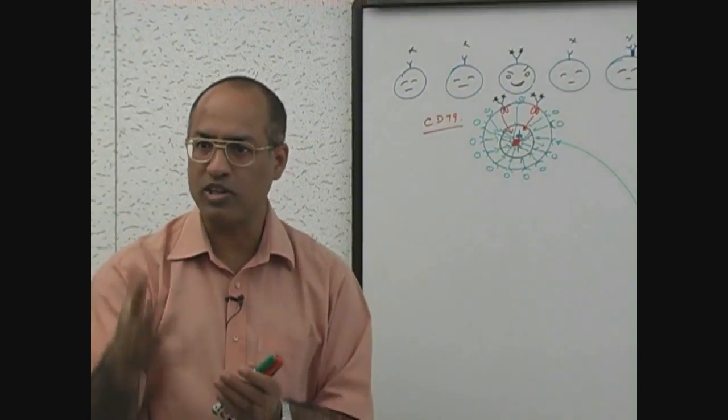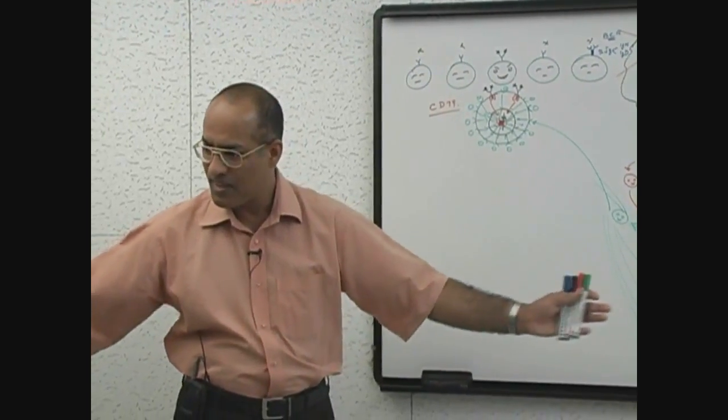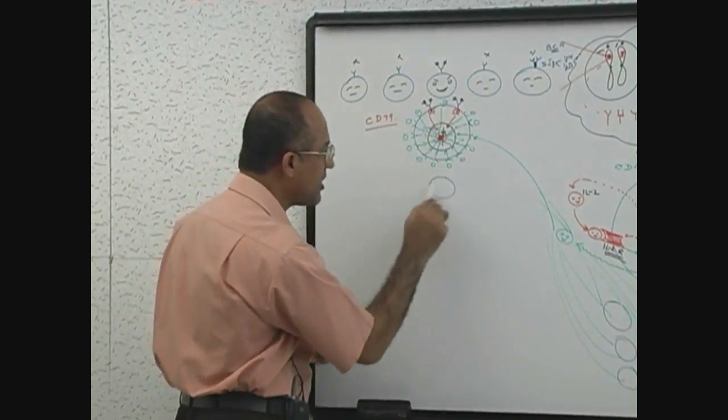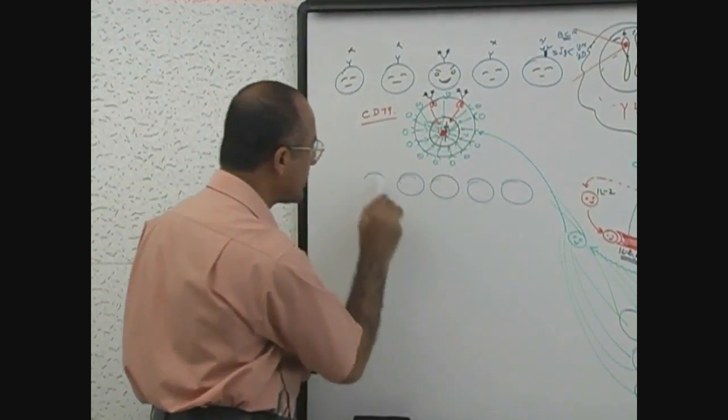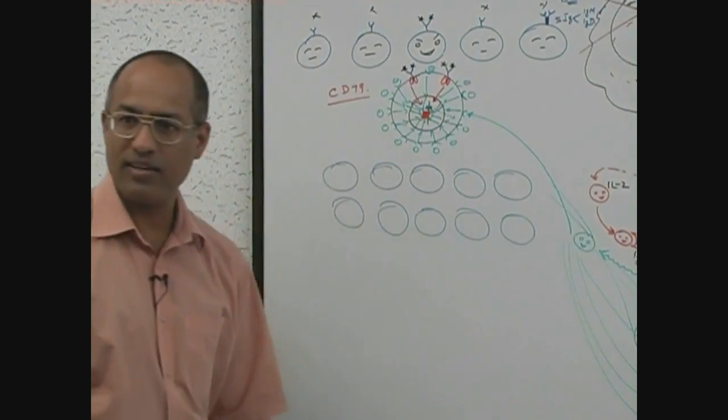And B cell clones start expanding. And this particular B cell undergoes extensive mitosis and these cells, number increase or decrease? Increase. The number? Increase.